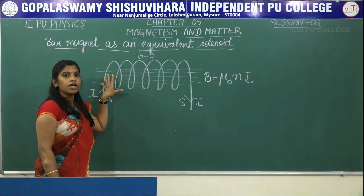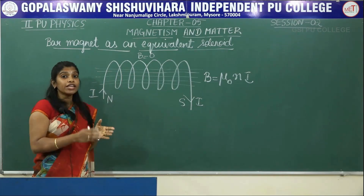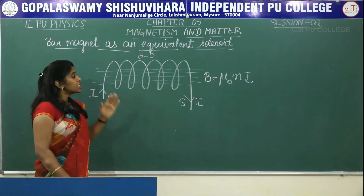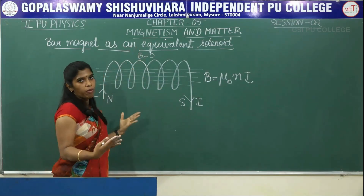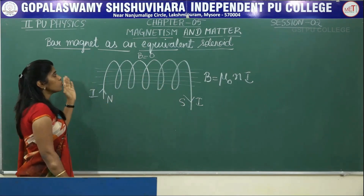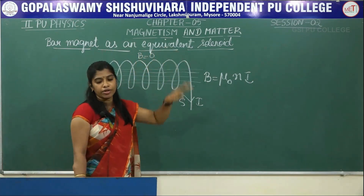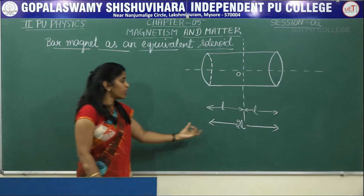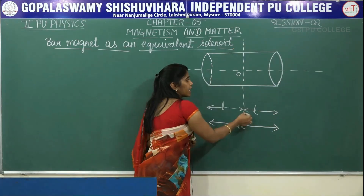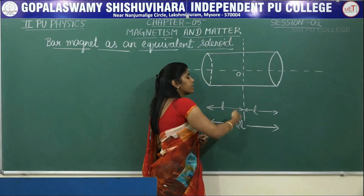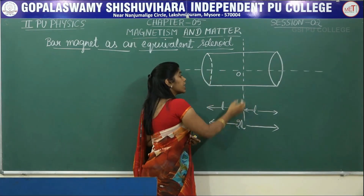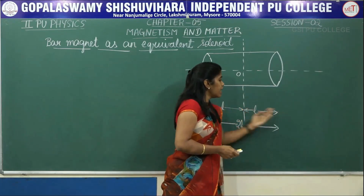If you take a bar magnet and break it into two pieces, you get two bar magnets of weaker magnetic property. Similarly, if you take a solenoid and cut it into two parts, you get two solenoids of weaker magnetic properties. So let me show that a bar magnet is equivalent to a solenoid. Let us consider a solenoid of length 2L. I have marked a midpoint O — this is called the midline — and the axis is perpendicular to the midline. The length of the solenoid on each side of the midline is L.